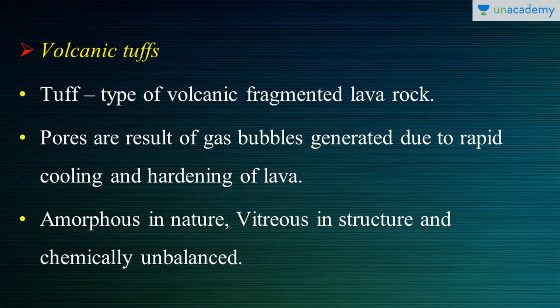First and foremost we will start with the volcanic tuffs. Some say tuff, some say tuft — we can pronounce it as volcanic tuff for convenience. These are a type of volcanic fragmented lava rocks, which means this is a lava derivative. The word tuff is derived from the Italian word 'tufo'. This rock is made out of volcanic ash which is erupted from a vent during the volcanic eruption. Following the eruptions and after the deposition, these ashes consolidated and hence formed in rock form.